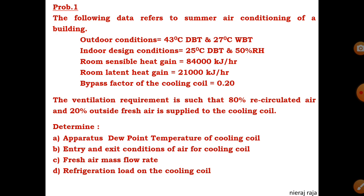Depending upon the number of occupants and what activity is going on in the room, occupancy also dissipates heat. Every activity, whether it's a gym, a bank, or a house, releases a particular heat. By considering all those heat gains, we classify them as sensible heat and latent heat. The sensible heat is 84,000 kJ per hour and latent heat is 21,000 kJ per hour. Sensible heat only changes the DBT, while latent heat is responsible for changing the humidity or moisture content.